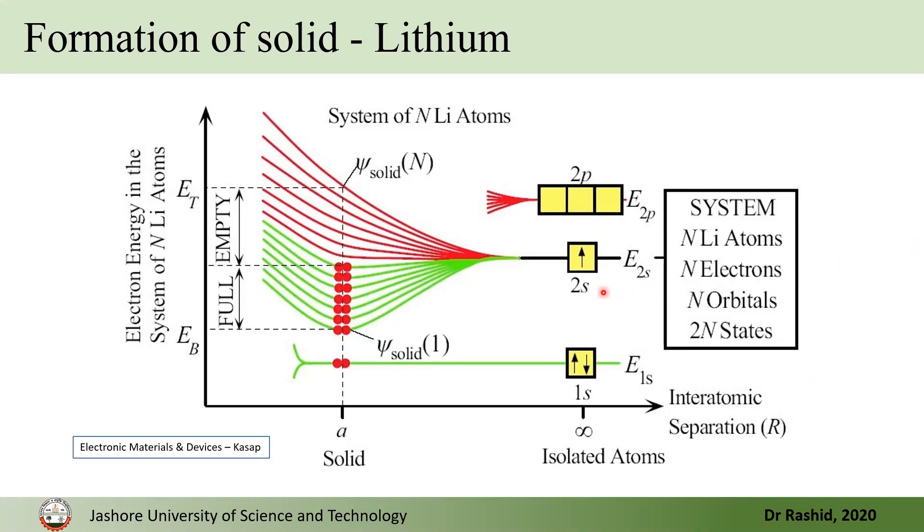So, if a number of lithium atoms come together, the two S orbitals of each of the atoms split to form the orbitals of the solid. Now, in each orbital, there are two states, that is, two electrons can occupy one orbital with opposite spins.